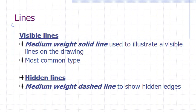Visible lines are the most commonly used line in aviation drawings and are a medium-weight solid line used to depict visible edges and boundaries. Hidden lines are medium-weight dashed lines used to show edges not visible in that view.